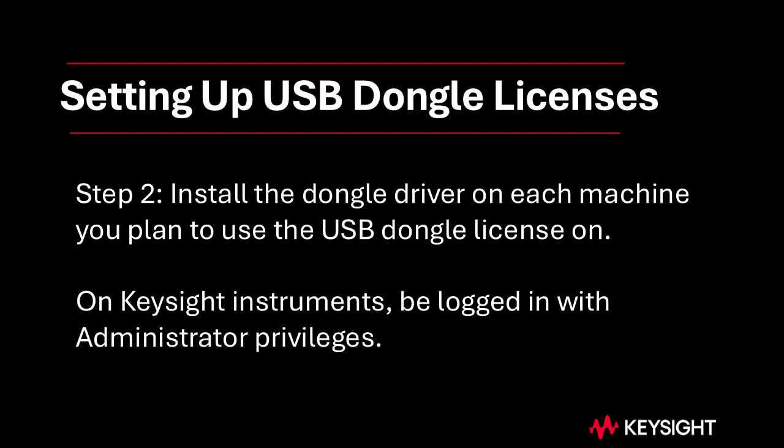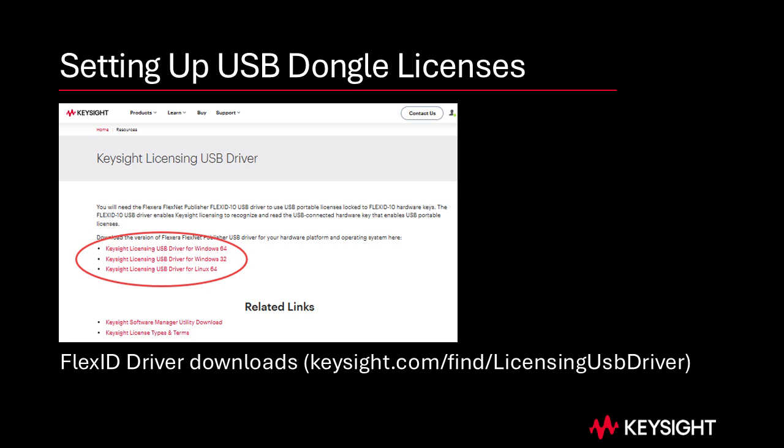Step 2: Install the dongle driver. Perform this step on each machine on which you plan to use the USB dongle license. When installing the dongle driver onto a Keysight instrument, be sure you are logged in with administrator privileges. First, download the FlexID 10 USB dongle driver package for your OS platform directly from Keysight.com/find/licensing-USB-driver.